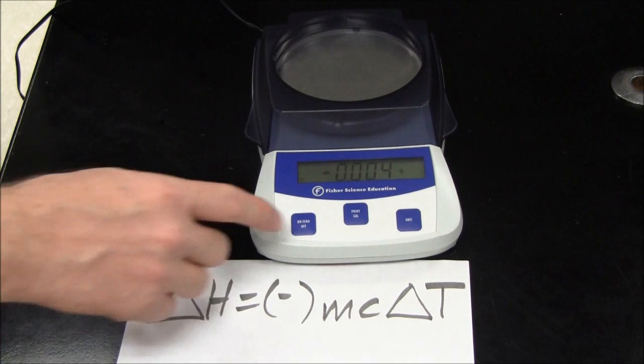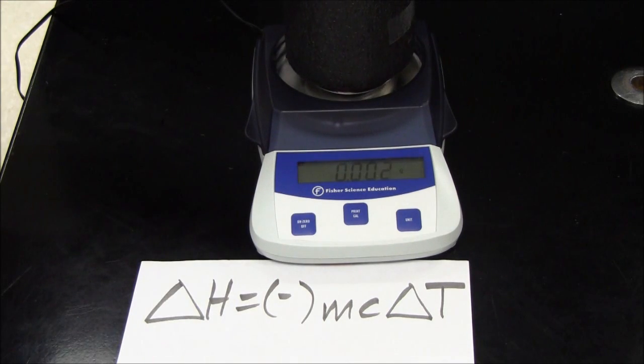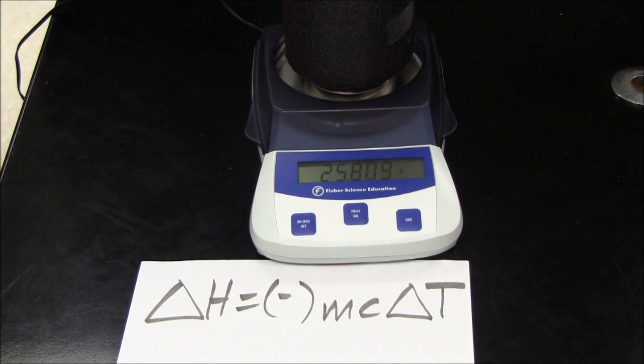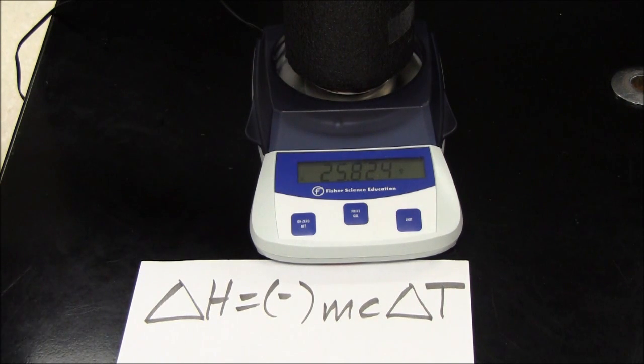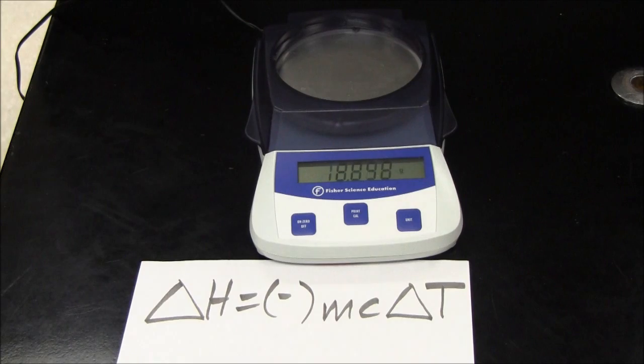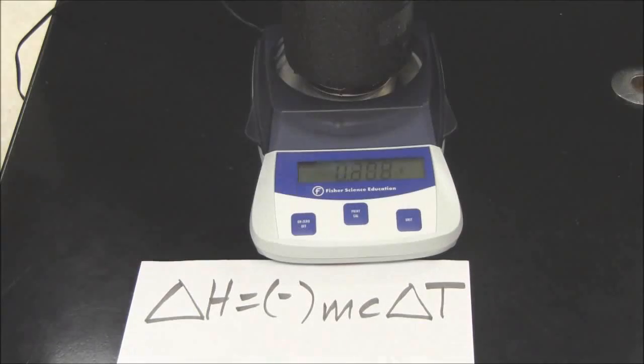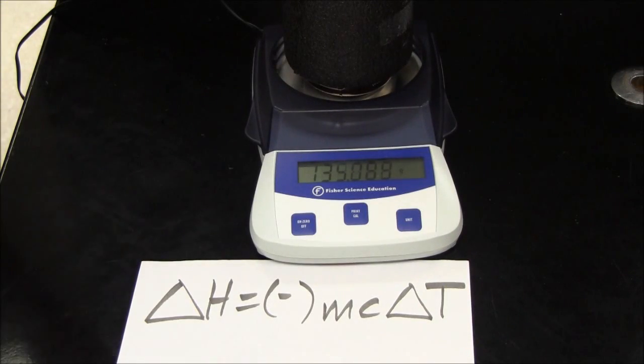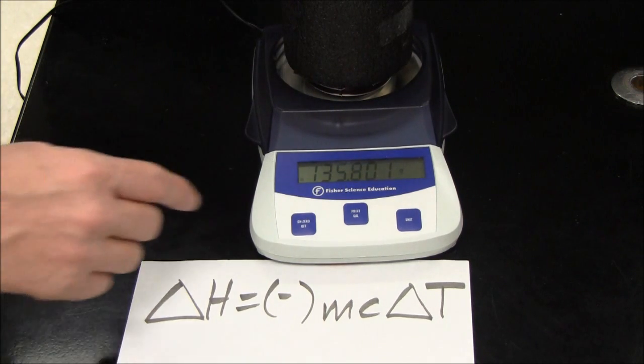So let's mass the calorimeter. All right, that's the mass of the calorimeter, now let's add some water. So this is the mass of the calorimeter with water in it. So the difference in those two masses is obviously the mass of the water.